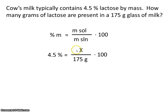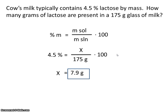And we want to know how many grams of solute, or how many grams of sugar, are present. After carrying out the algebra, we would calculate that there are 7.9 grams of sugar present in this glass of milk.